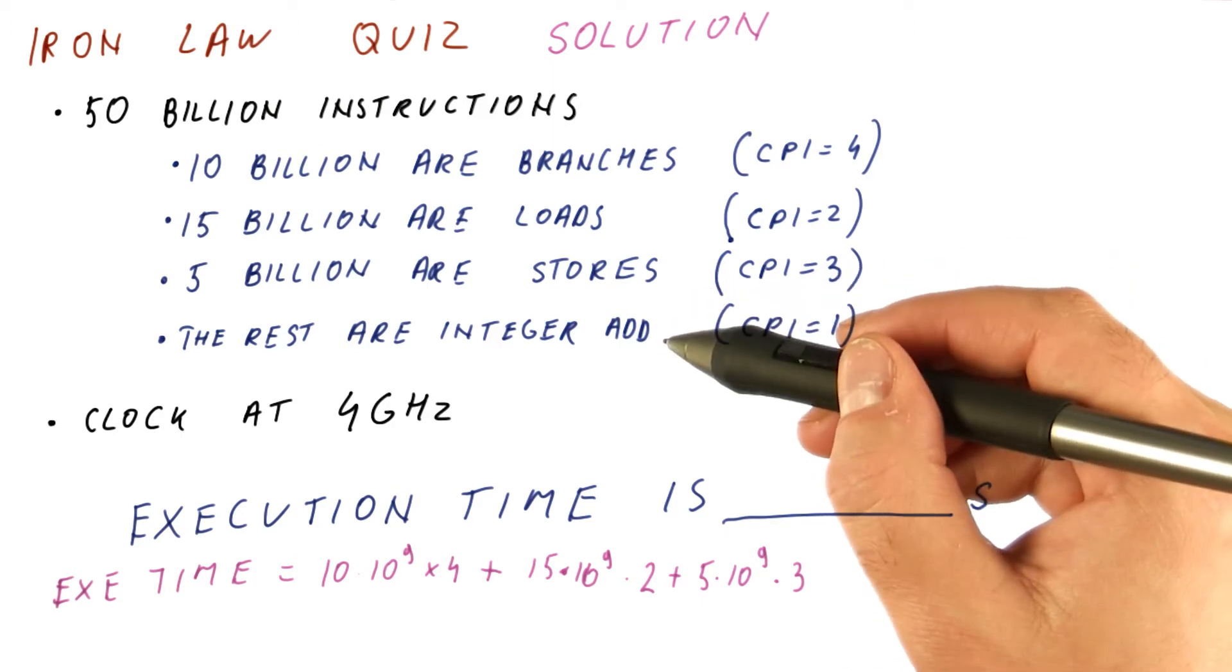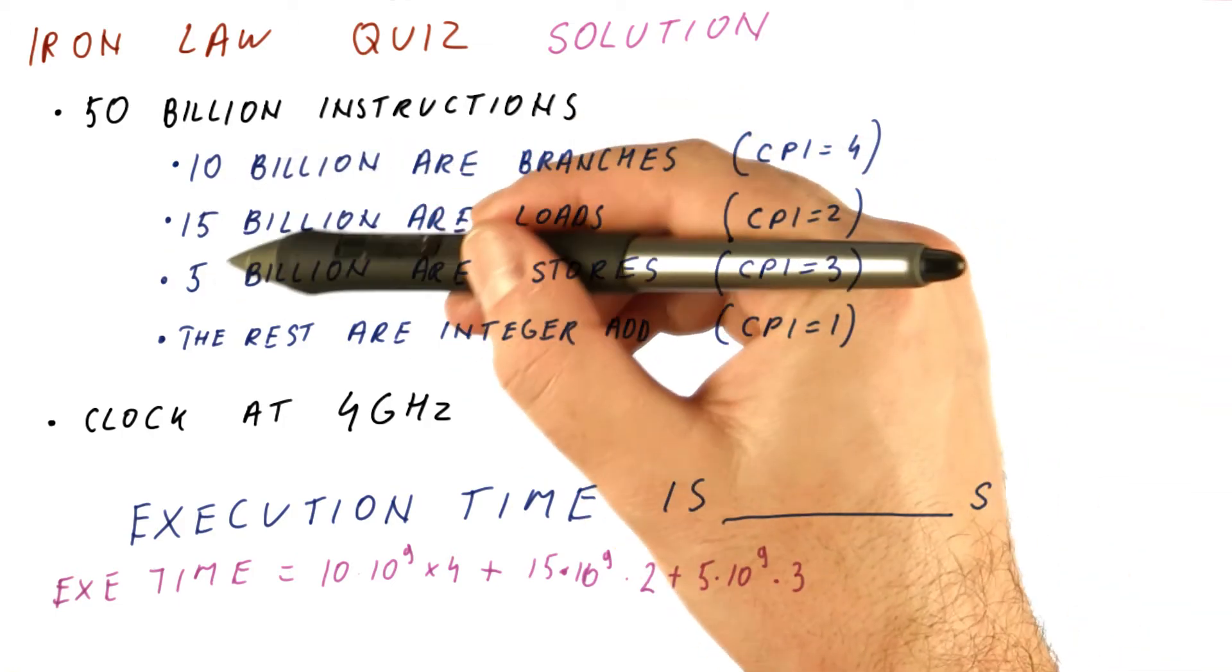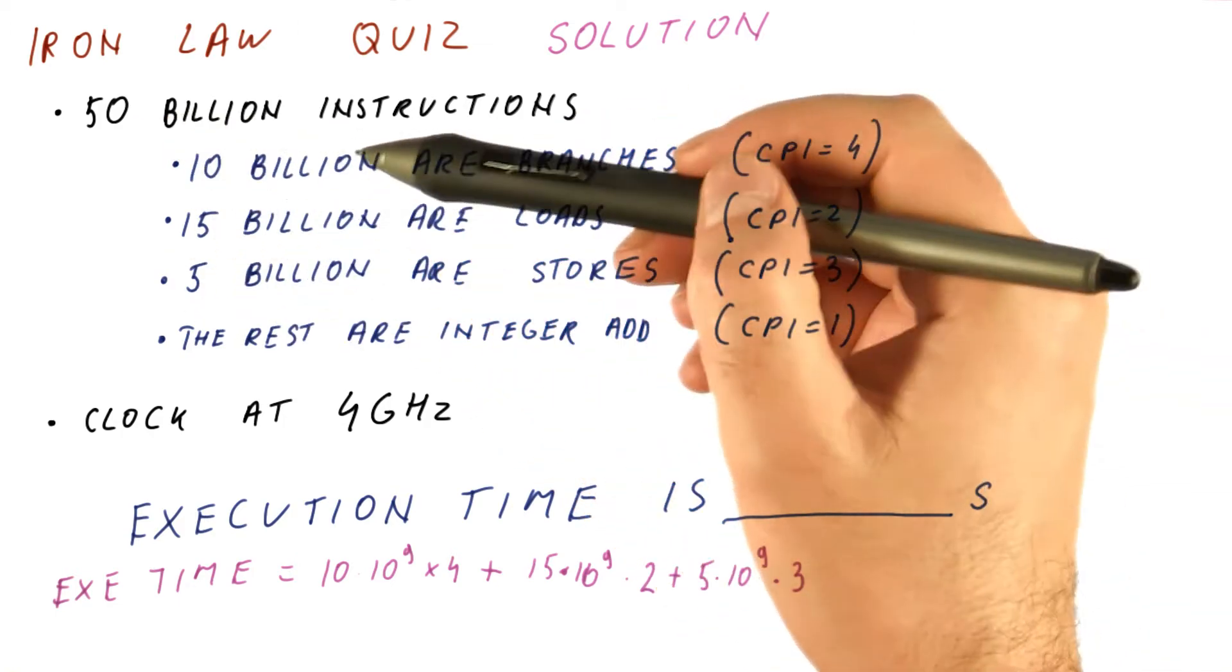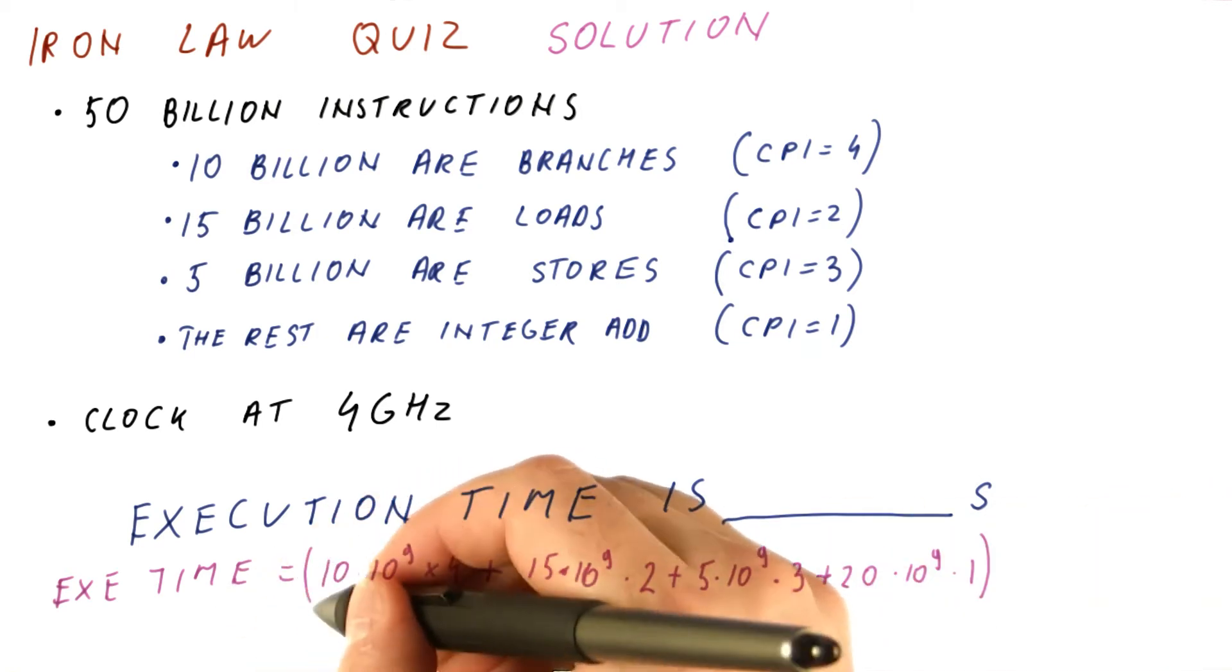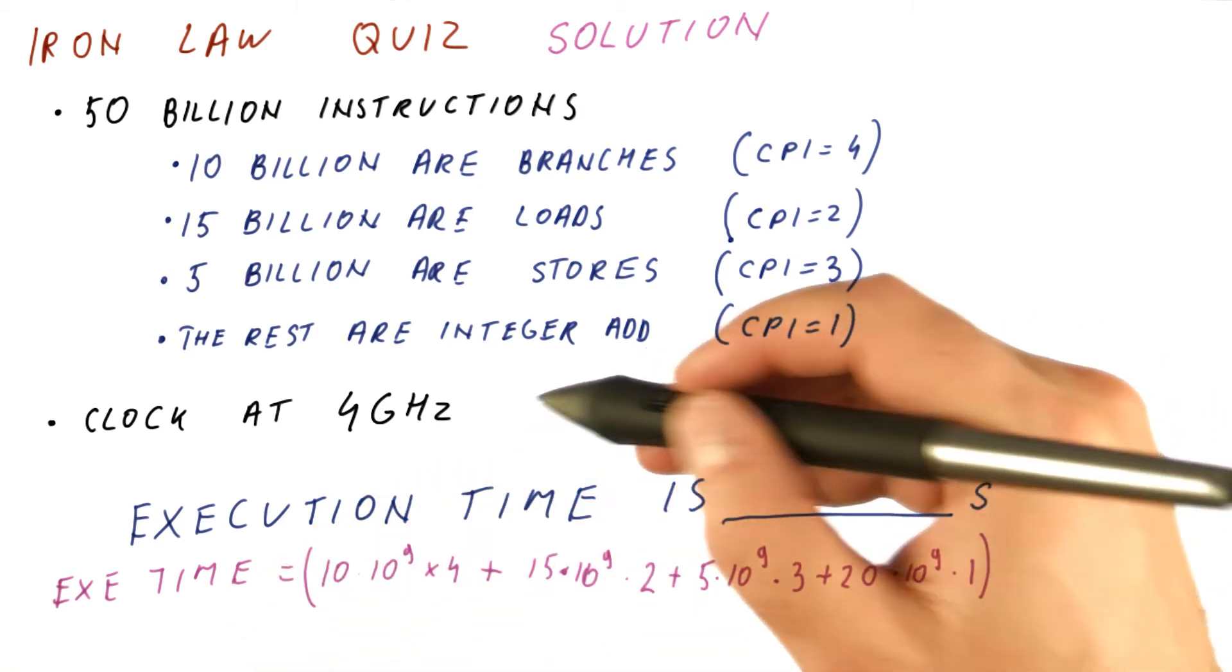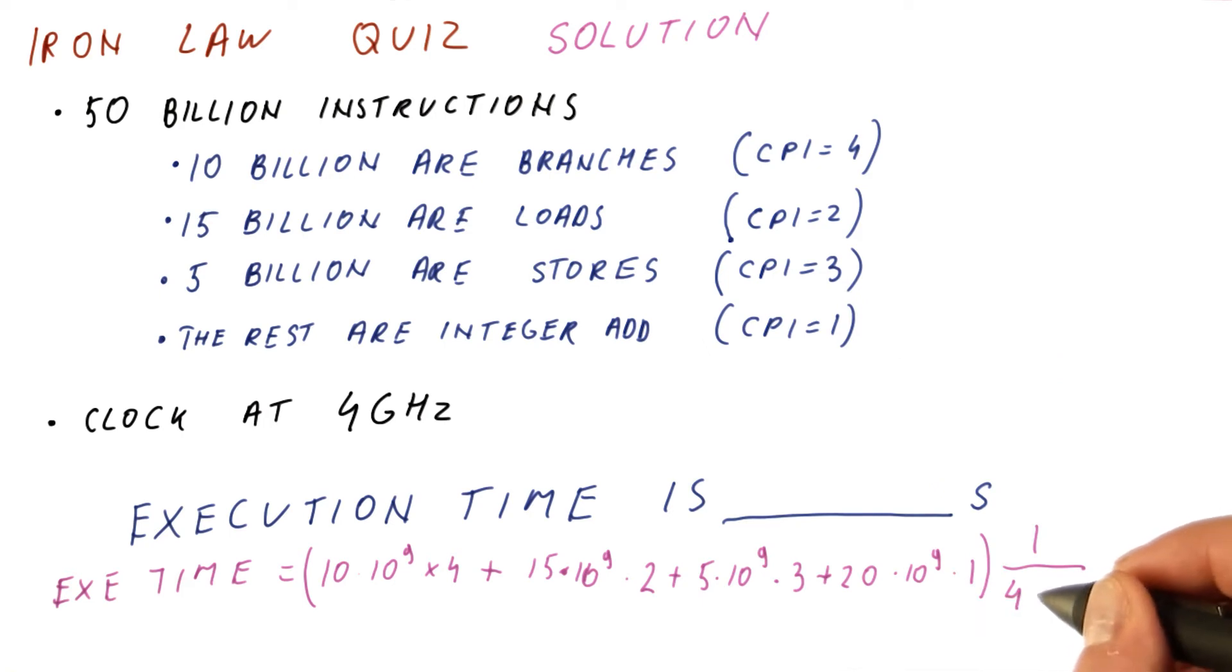And we said the remaining instructions are integer add instructions. We have 30 billion instructions here, so 20 billion are integer adds at CPI of 1. And all of that times the clock cycle time, which is 1 over 4 times 10 to the ninth.